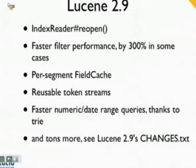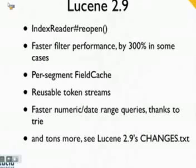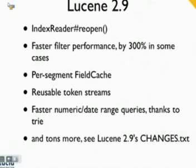On the indexing side of things, the token stream API has been drastically overhauled. There are now reusable tokens and attribute sources, and numerous improvements in terms of performance and memory usage — taking advantage of reusing objects without creating a large number of objects that need to be garbage collected during indexing. These are pretty dramatic improvements.